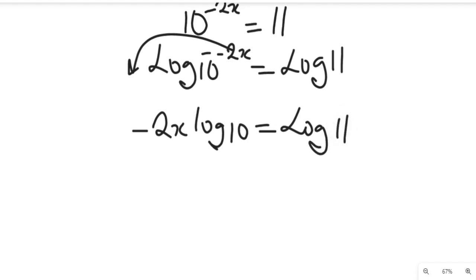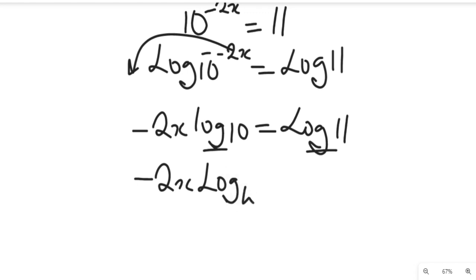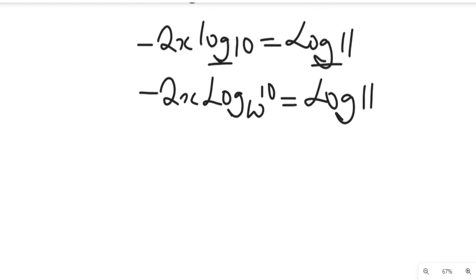Now I want you to note that any log without an assigned base is always in base 10. So these logs are all in base 10, because we didn't assign any base to them. So we'll have log of 10 to base 10 here, which equals 1.